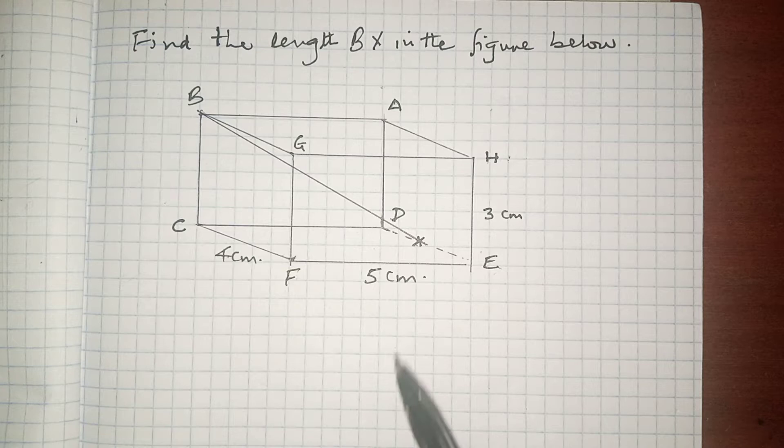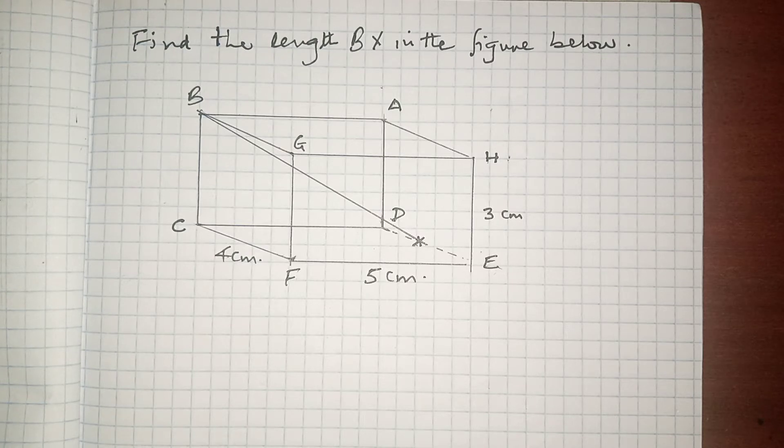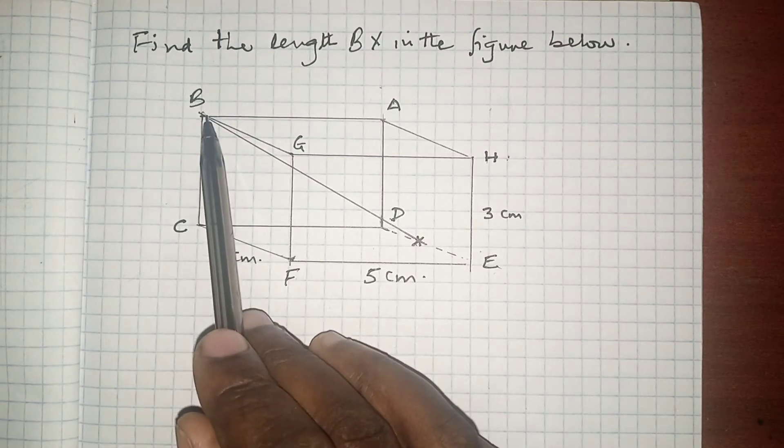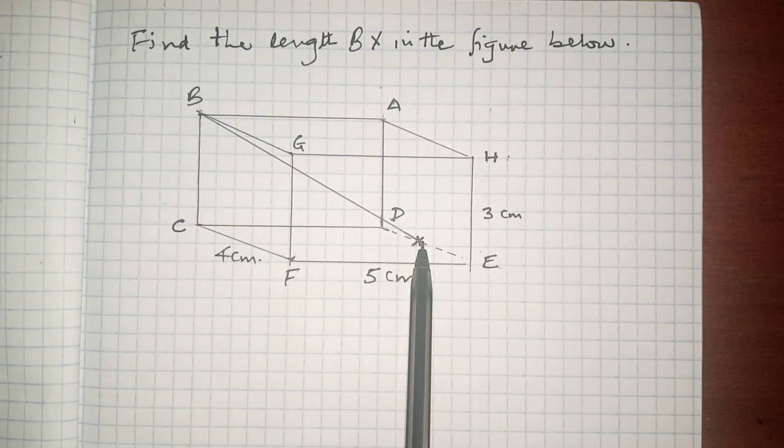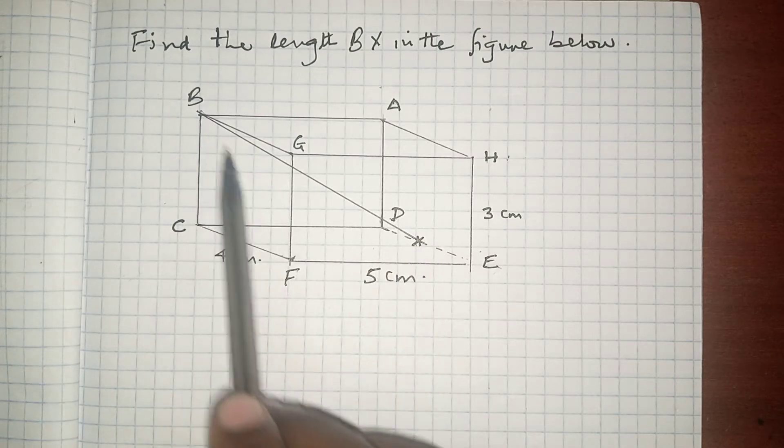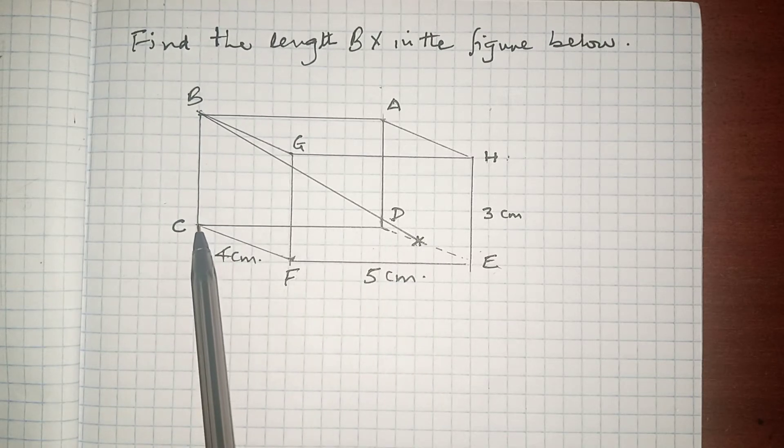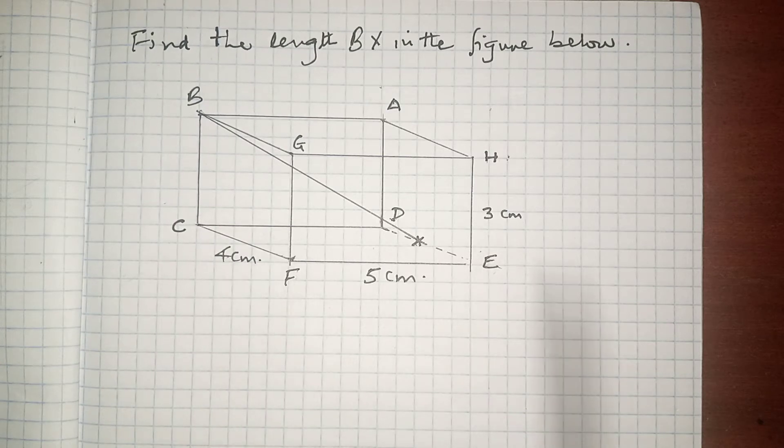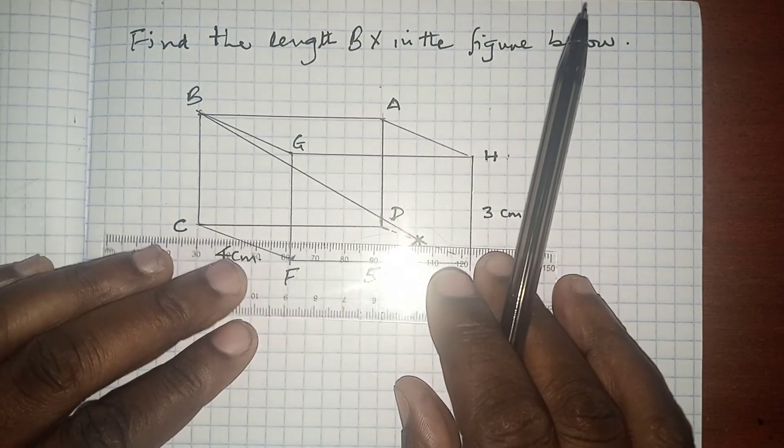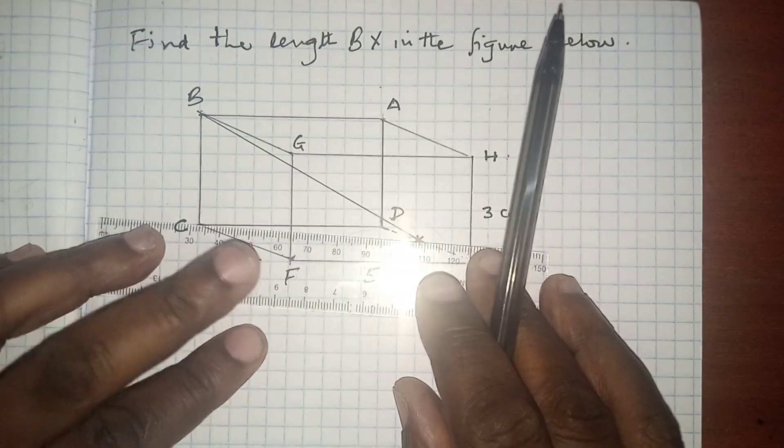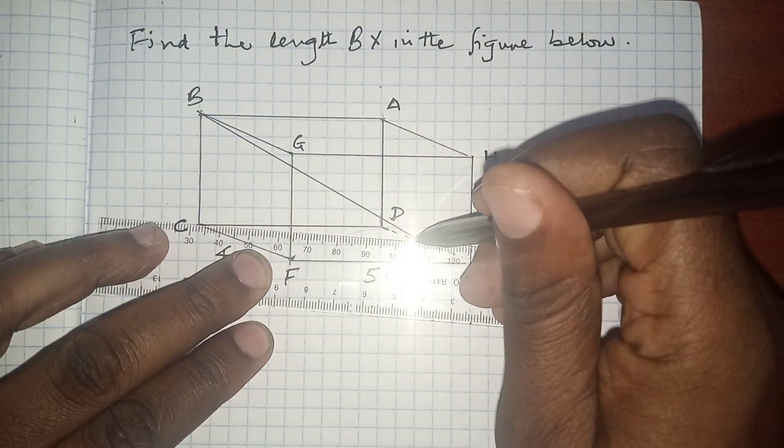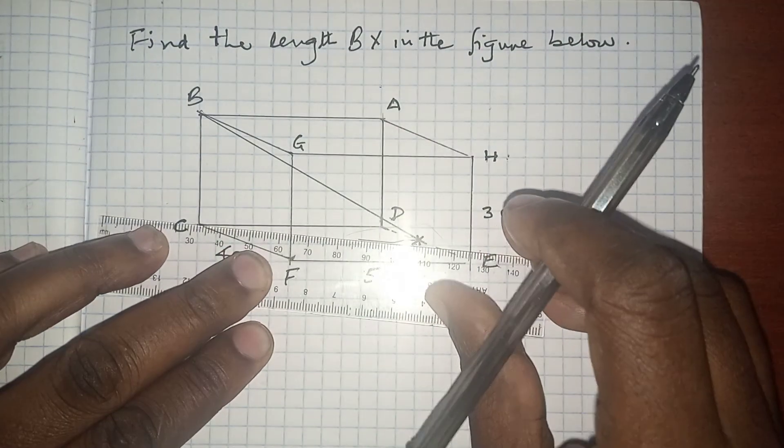Therefore, we would want to extract some very important triangles that are going to help us solve this question. When we talk about BX, we can have a completed triangle BCX. That means we need the length CX.